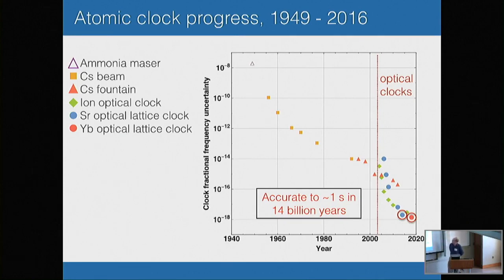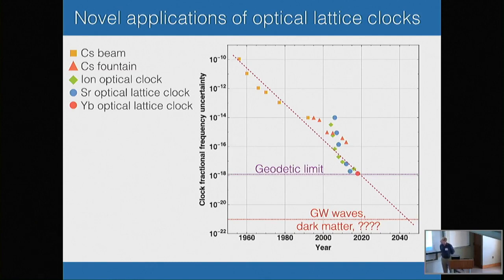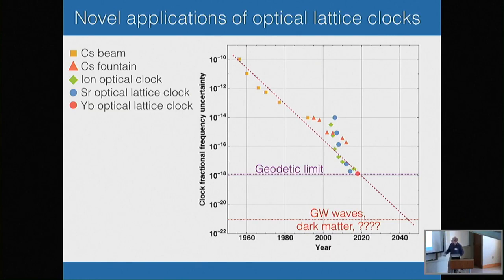It's reasonable to ask, well, what are they good for? You can project forward the progress that clocks have made and imagine some kind of Moore's law type scaling for performance. Pretty soon we're going to be getting down to 10 to the minus 20, 10 to the minus 22 — sensitivities suggestive of what you might need to see gravitational waves and things like that. We're already crossing the geodetic limit that Andrew talked about, which is our ability to measure the height of these clocks with respect to the Earth's geoid. That opens a whole range of novel applications.